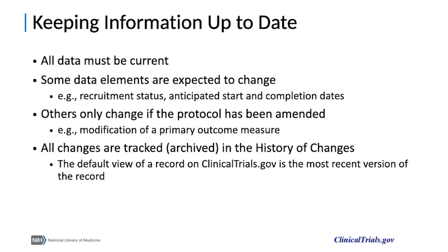Finally, it is vital to keep information up to date on clinicaltrials.gov so that potential participants can determine if it's possible to enroll in a trial, and so that any valid changes to the pre-specified analyses are documented. Relevant fields include the recruitment status, the start and completion dates, and the registered outcome measures. All changes to a record are tracked on clinicaltrials.gov so if a trial evolves to take a different course, the evolution of the study is transparent.